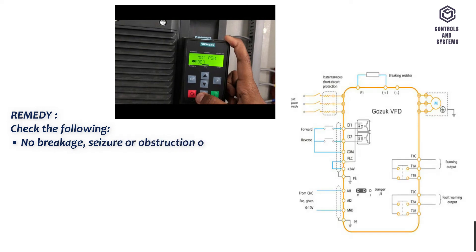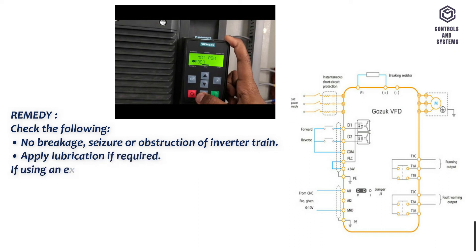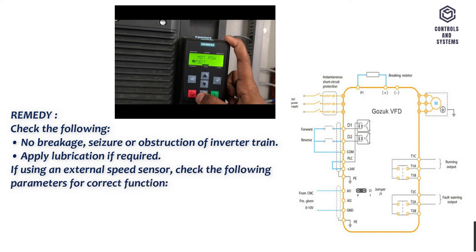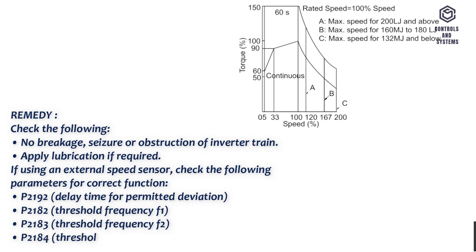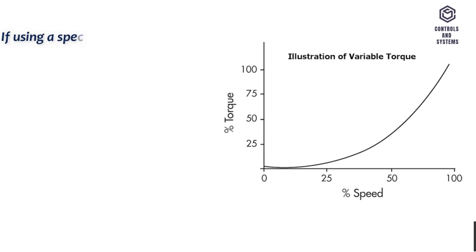Remedy: check for no breakage, seizure, or obstruction of the drive train; apply lubrication if required. If using an external speed sensor, check the following parameters for correct function: P2192 — delay time for permitted deviation; P2182 — threshold frequency F1; P2183 — threshold frequency F2; P2184 — threshold frequency F3.